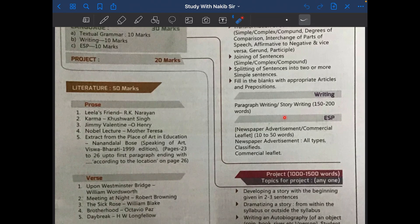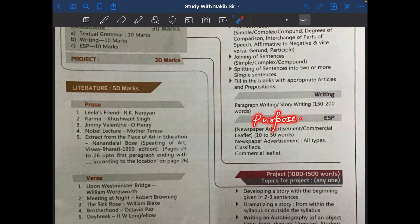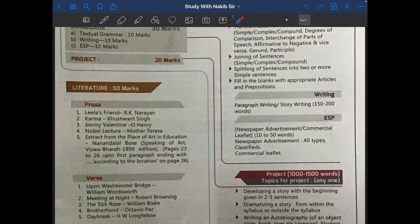The last section is ESP — English for Special Purpose — and it carries 10 marks. The ESP section has two components: newspaper advertisement (all types, classifieds) and commercial leaflet writing. You have to write one question from newspaper advertisement and one question from commercial leaflet, each carrying five marks — together five plus five equals 10 marks.